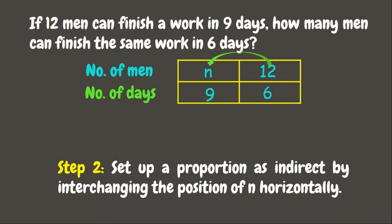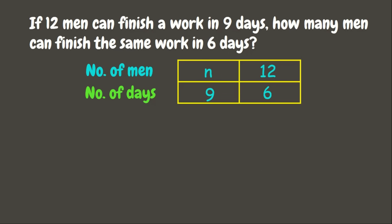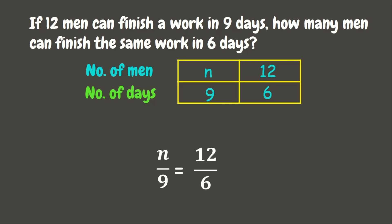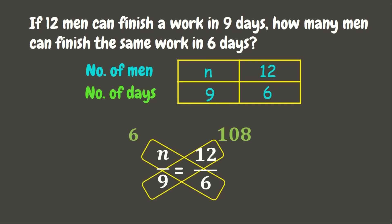Now we are ready for our third step — let's find the missing term. Our given proportion is n over 9 equals 12 over 6. Let's use cross multiplication: 6 times n is 6n, but let's write 6 only; 12 times 9 is 108.